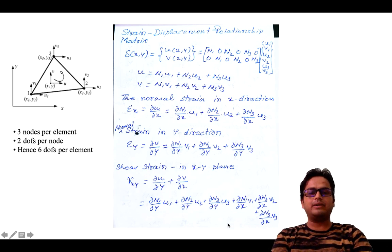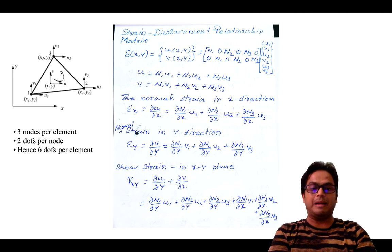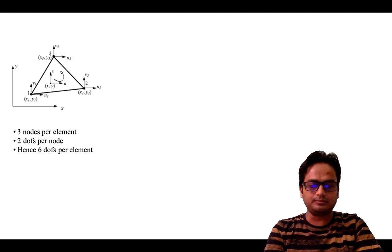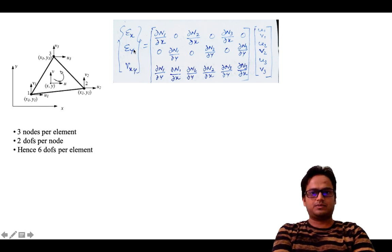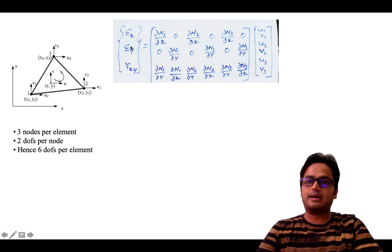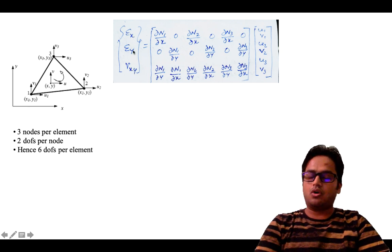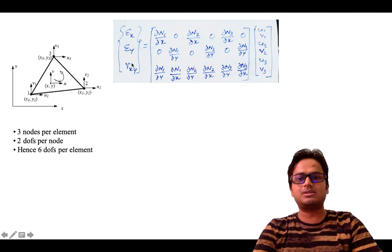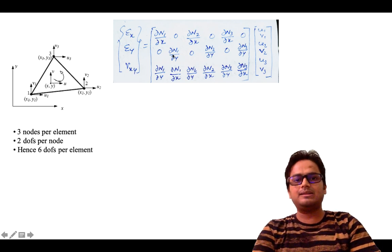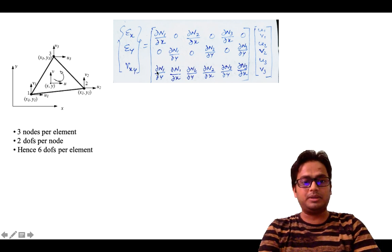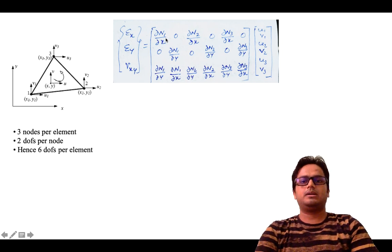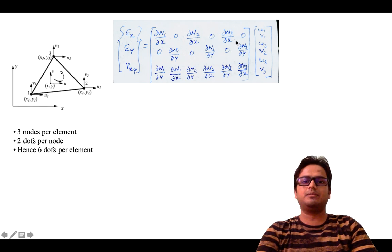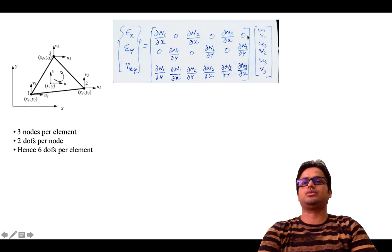We now have three equations. We will write them in matrix form. So epsilon_x, epsilon_y and gamma_xy — that is normal strain in x direction, normal strain in y direction and shear strain — written in matrix form gives us the matrix: dn1/dx, 0, dn2/dx, 0, dn3/dx, 0 in the first row.